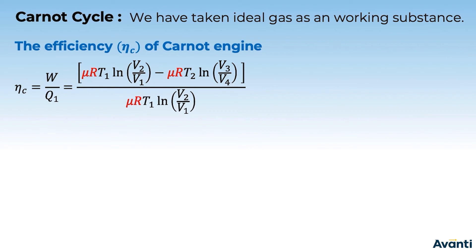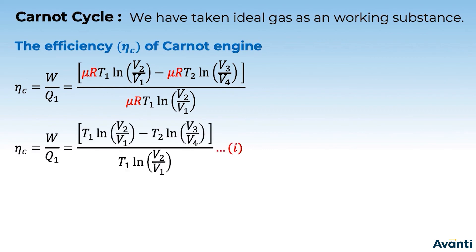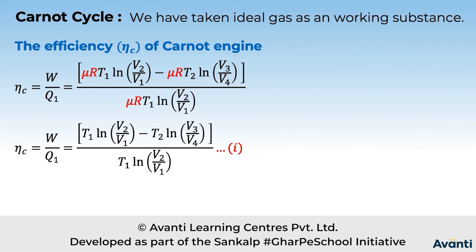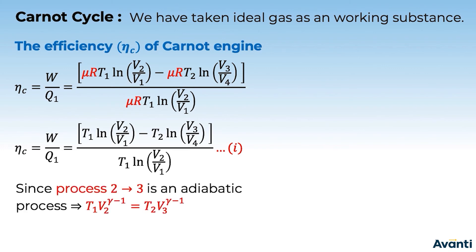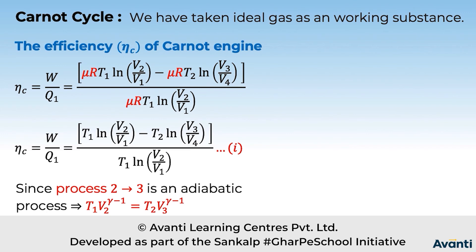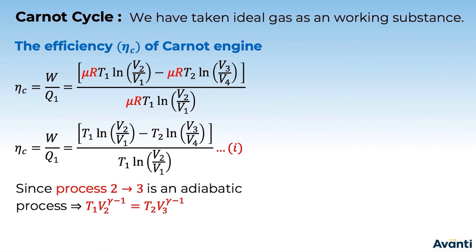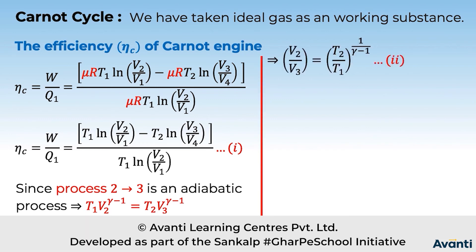To get the efficiency in terms of temperature only, we correlate V1, V2, V3, V4. Since process 2 to 3 is adiabatic, TV^(γ−1) = constant, so T1·V2^(γ−1) = T2·V3^(γ−1), giving V2/V3 = (T2/T1)^(1/(γ−1)). Similarly, since process 4 to 1 is also adiabatic, T2·V4^(γ−1) = T1·V1^(γ−1), giving V1/V4 = (T2/T1)^(1/(γ−1)). Comparing these two results, we get V3/V4 = V2/V1.